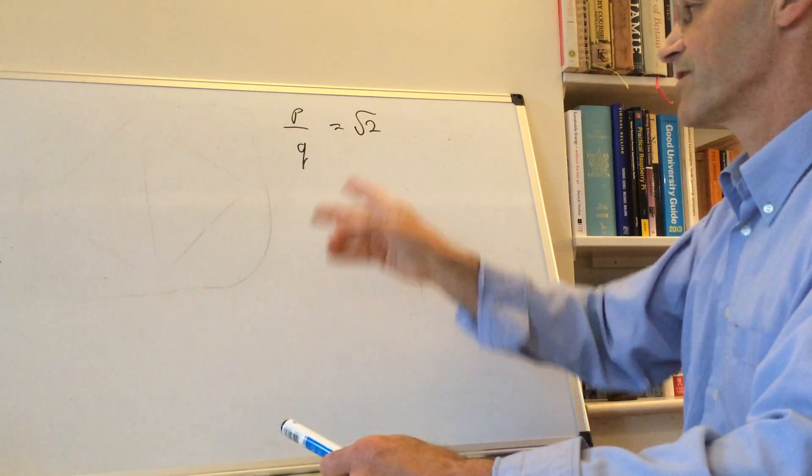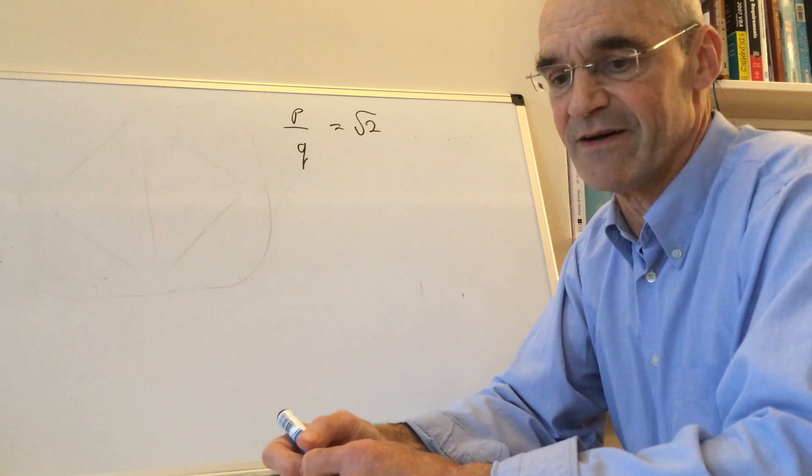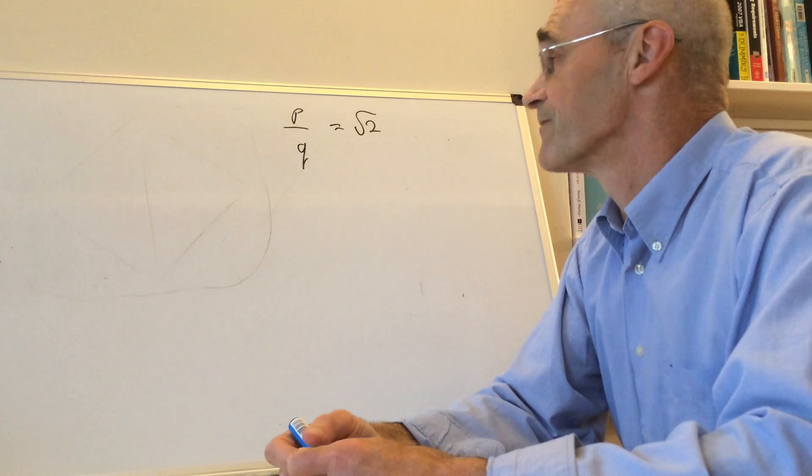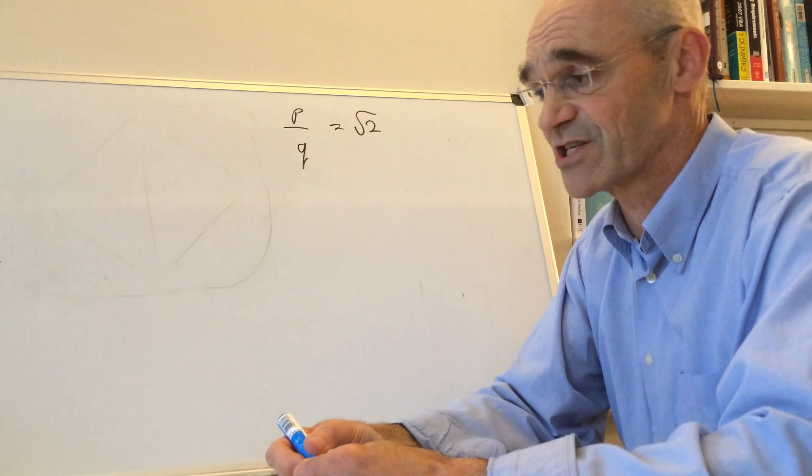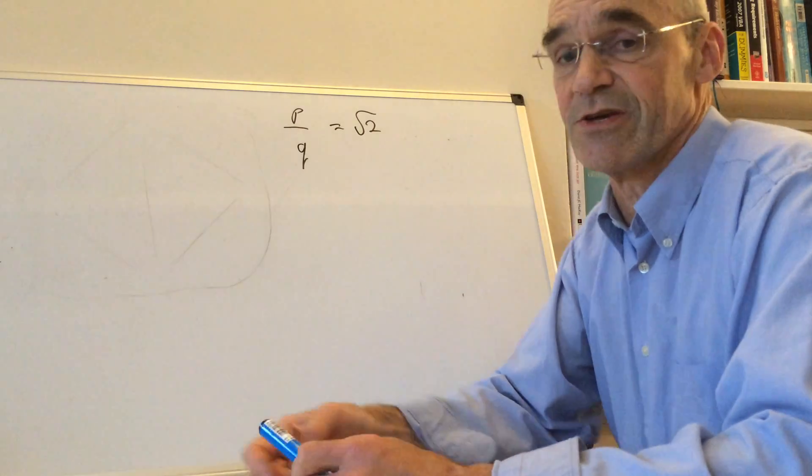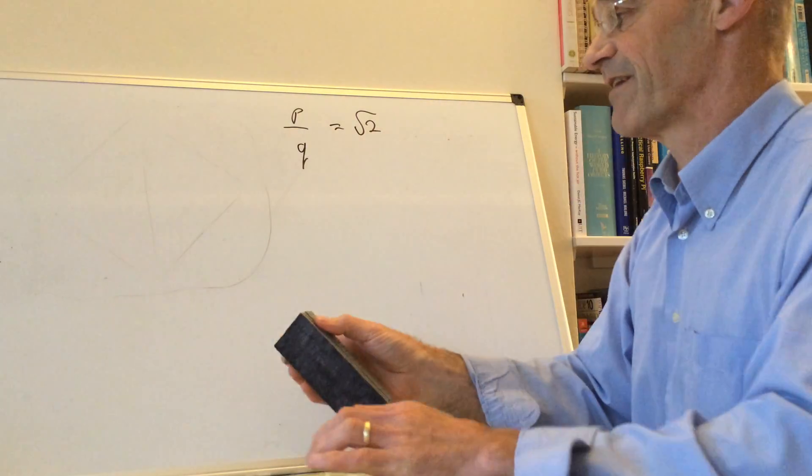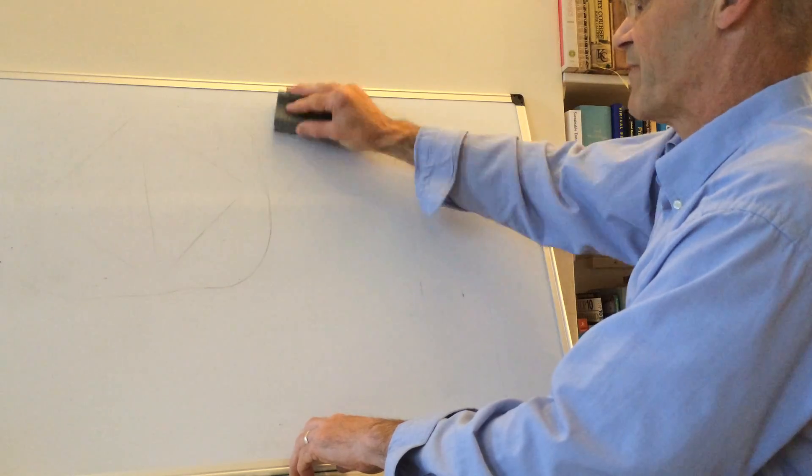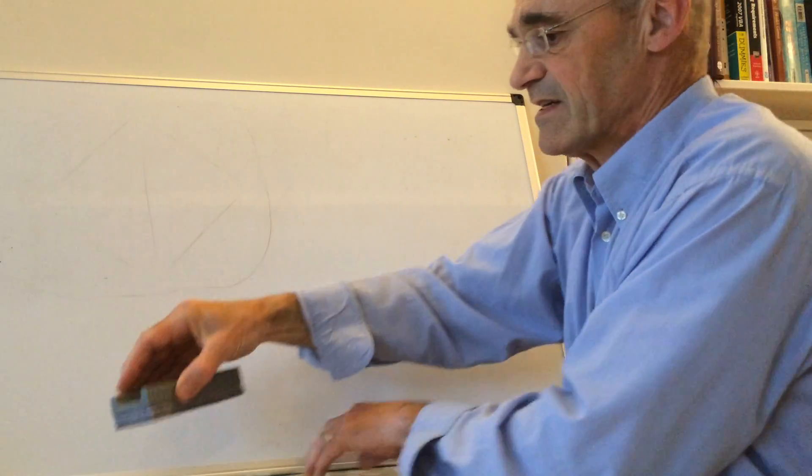And again the Greeks knew this, and there are a lot of proofs that √2 is irrational, and most of them are pretty boring. But I want to show you a geometric proof because I think it's lovely and geometry is just boss really in mathematics.